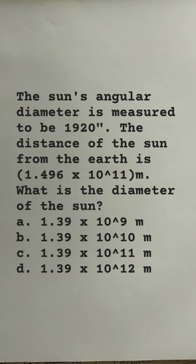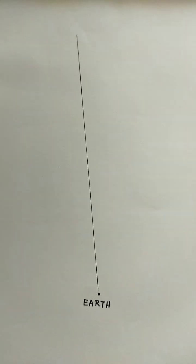Here is a problem where the Sun's angular diameter is given as seen from Earth, 1920 seconds, and the distance between Sun and Earth is also given. Using these two data we have to find the diameter of the Sun.